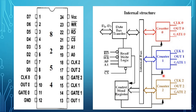The 8254 has three identical counters: counter 0, counter 1, and counter 2. Each counter is a 16-bit presettable down counter which can operate in either binary or BCD mode. They can operate independently in any one of six operating modes: mode 0 interrupt on terminal count, mode 1 programmable one shot, mode 2 rate generator, mode 3 square wave generator, mode 4 software triggered mode, and mode 5 hardware triggered mode.